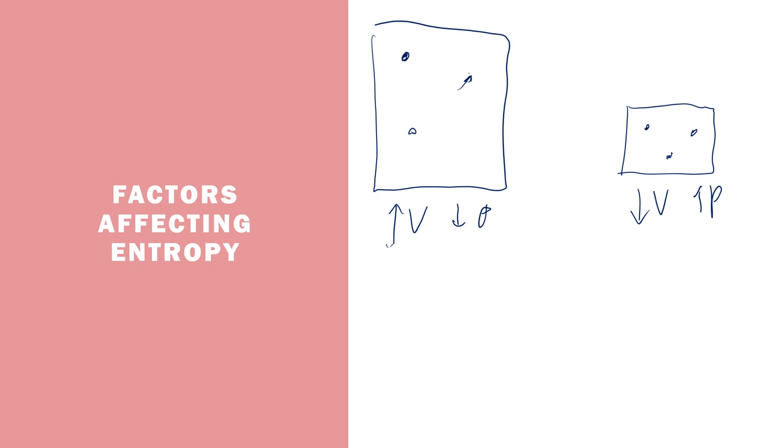When you have the larger volume and lower pressure, the particles have more space to move around in, and they have more potential different locations that they could be, and they can be more disorganized with this larger space to move around in. So that will lead to a greater entropy. But when you have a smaller space, there's fewer potential microstates and therefore it will have a lower entropy. And this is for gases only. Liquids and solids are not affected as much by volume and pressure changes.